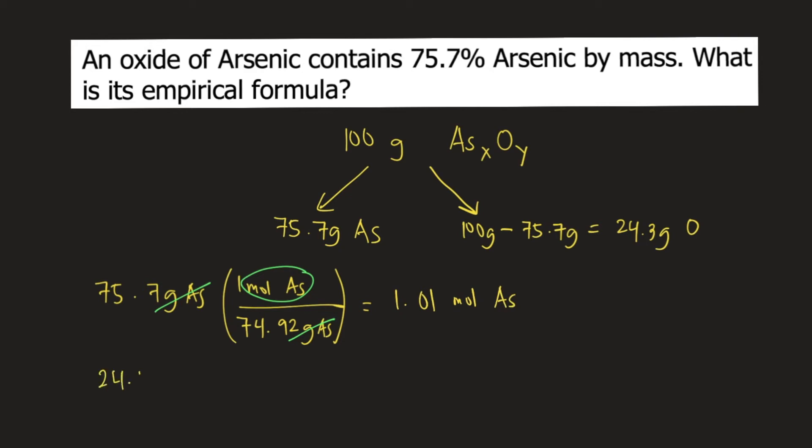We have 24.3 grams of oxygen. The molar mass of oxygen is 16 grams per mole. So 1 mole of oxygen weighs 16 grams. So grams of oxygen would cancel. We have moles of oxygen left. So the moles of oxygen is equal to 1.52 moles.